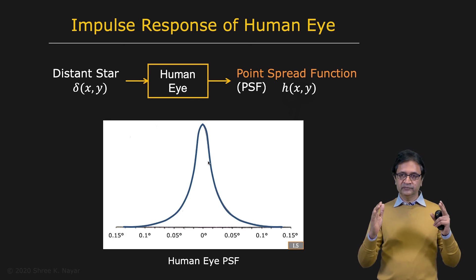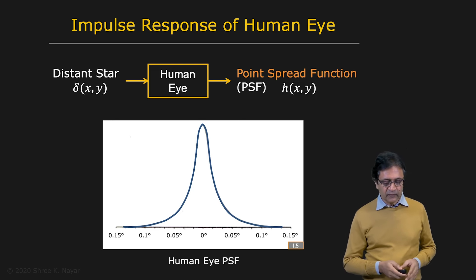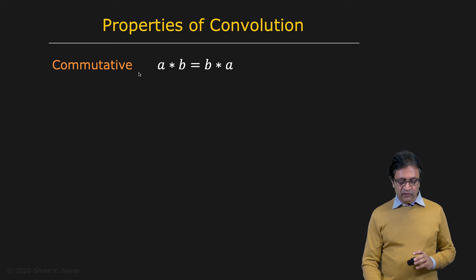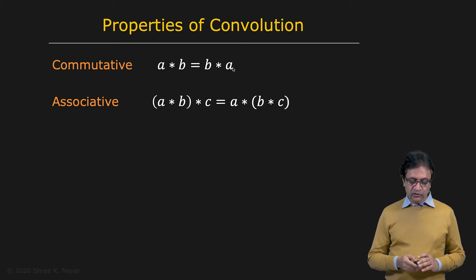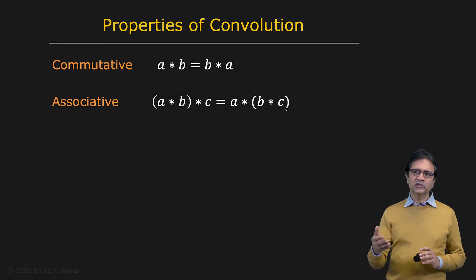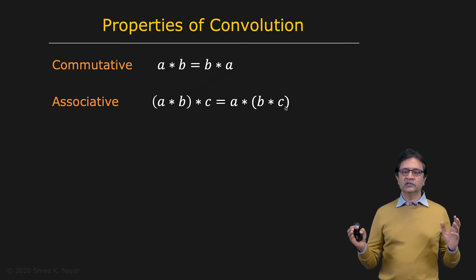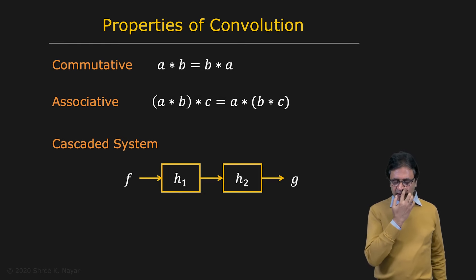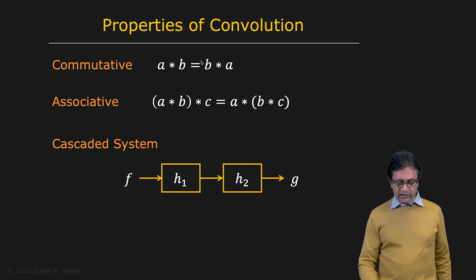A few properties of convolution. First, it's commutative, which means that A convolved with B is equal to B convolved with A. It's also associative in that A convolved with B, and that result convolved with C, is the same as A convolved with the result of B convolved with C. What these two properties tell you is that there's lots of things you can do to simplify a system that is performing a series of convolutions. These are called cascaded systems.